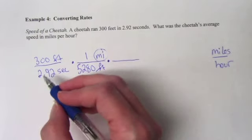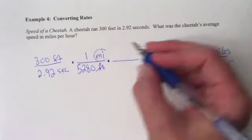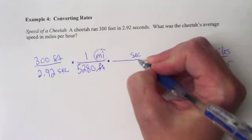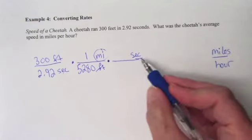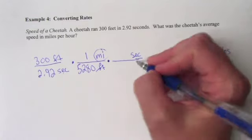I need to do the same thing with time. Seconds is on the denominator down here. I want it up here in the numerator so it will cancel. To get from seconds, we know we want to get to hours, but before we can get there, we have to go through minutes. So we have 60 seconds in one minute.